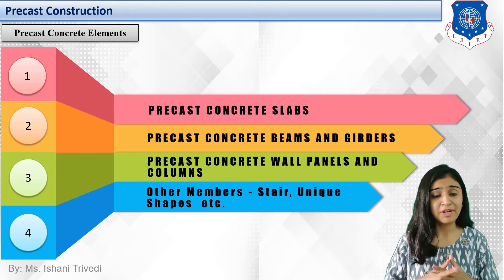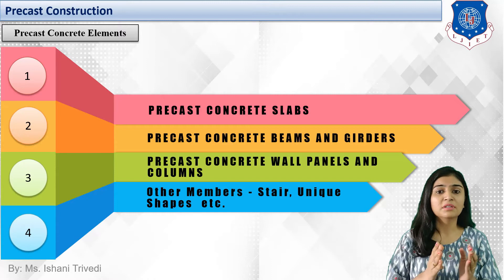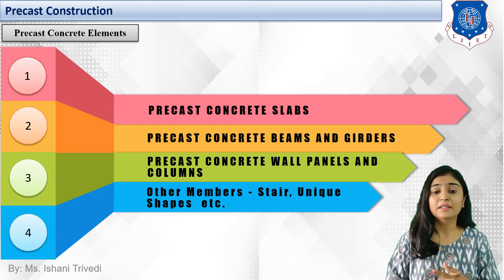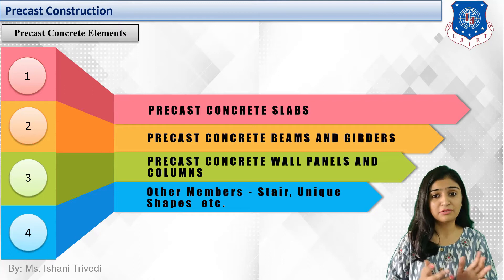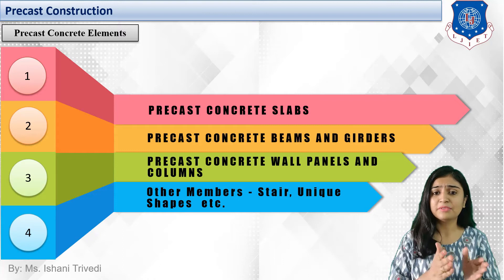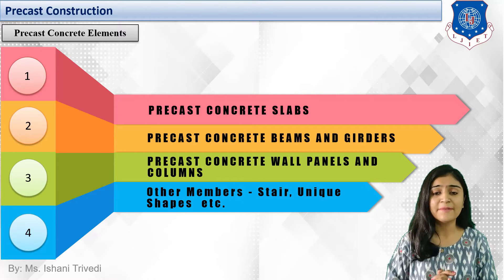So the sequence is: slab, beam, column, and wall — walls can also be made precast for RCC. This sequence itself becomes the various precast concrete elements. The third is precast concrete wall panels and columns. The above two — slab and beams/girders — are horizontal members, while walls and columns are vertical members.